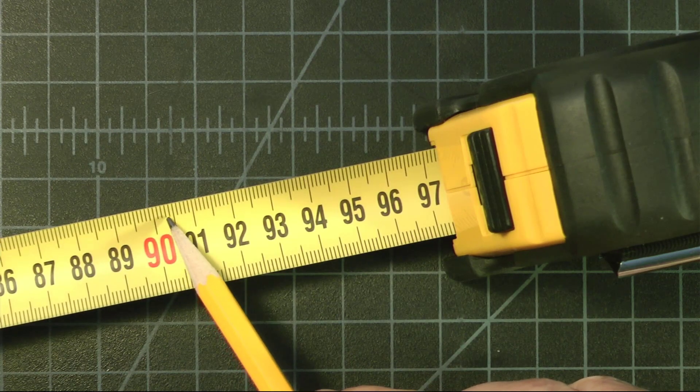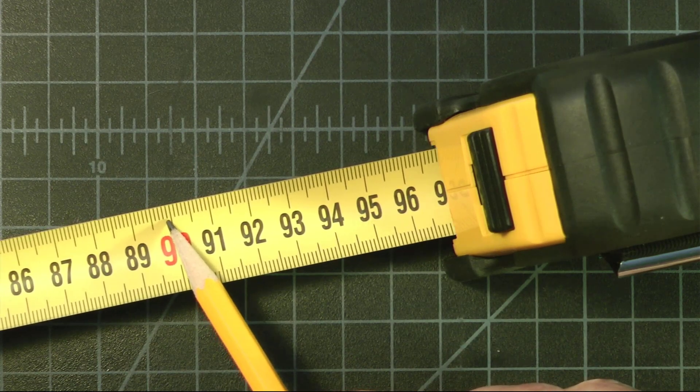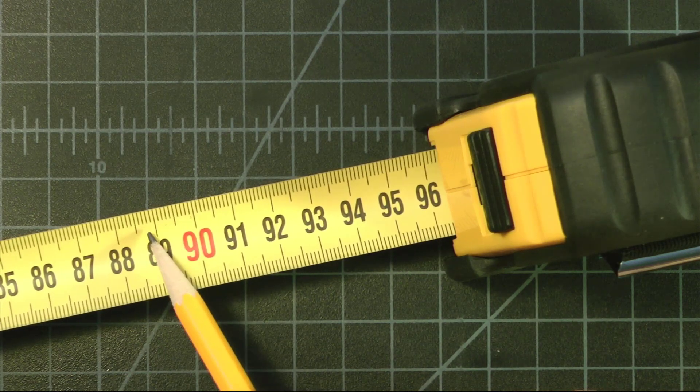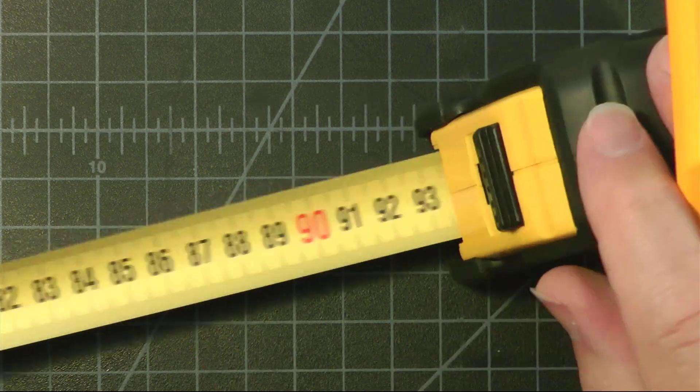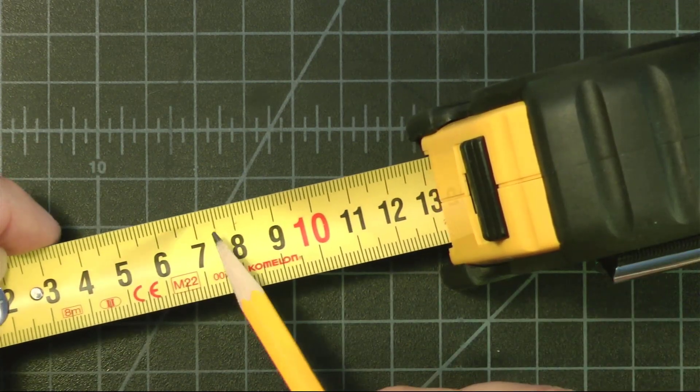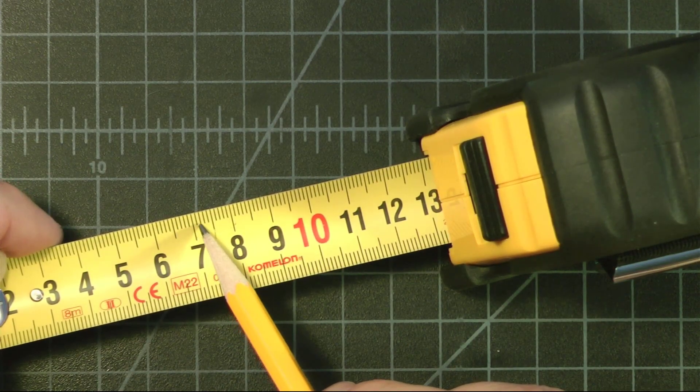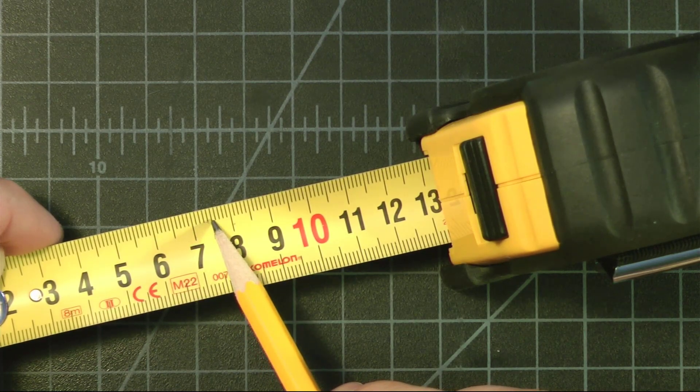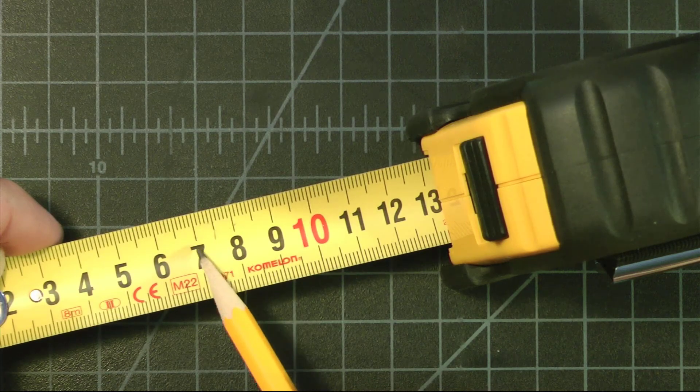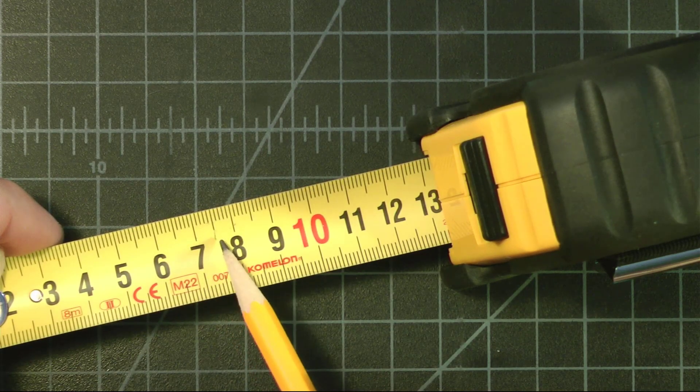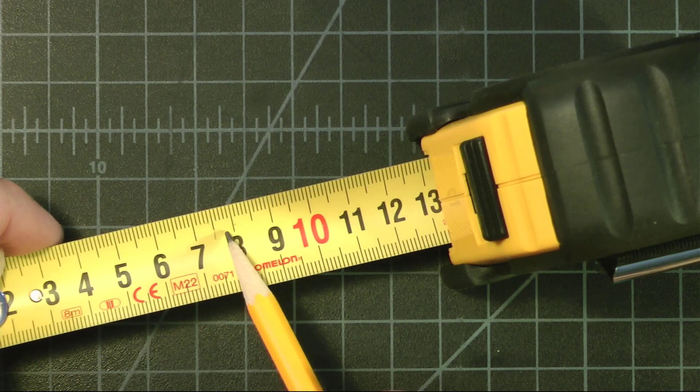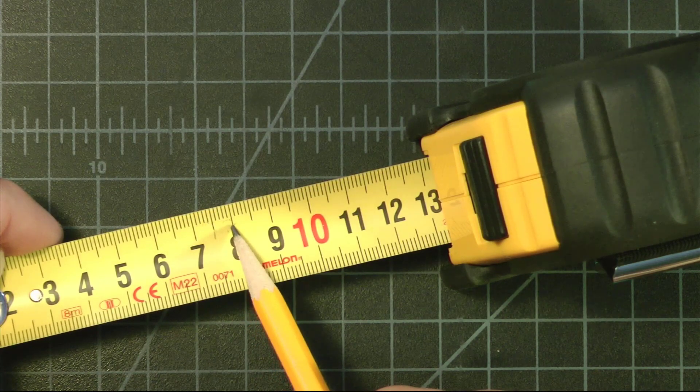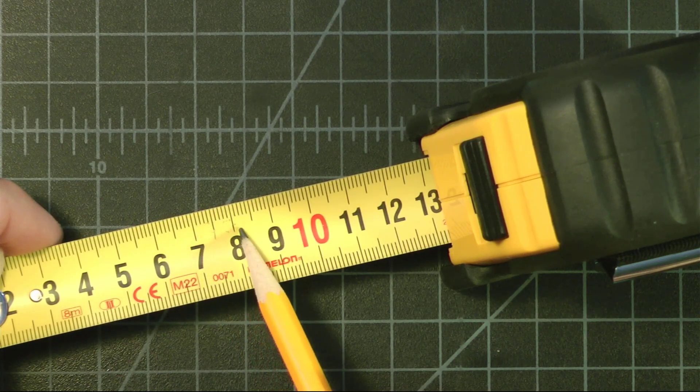As we look closely here, these tiny lines - there are 10 of them between each of the centimeters. We've got 1, 2, 3, 4, 5. So this is the halfway point between centimeter points. We have 5 more: 1, 2, 3, 4, 5 and it reaches 8. There are 10 millimeters in a centimeter.